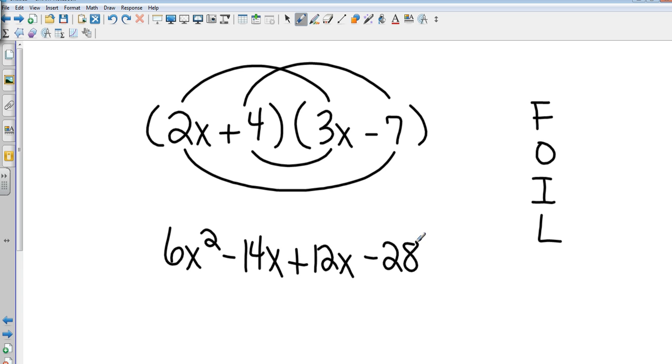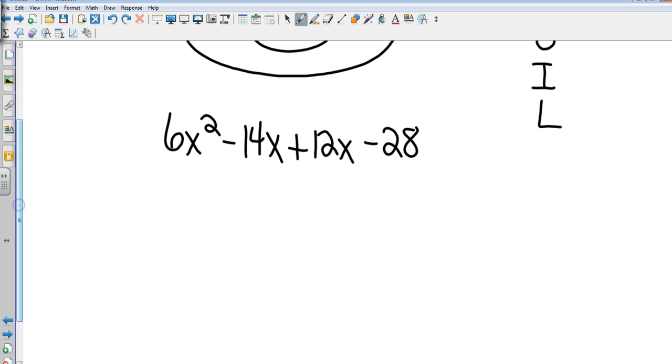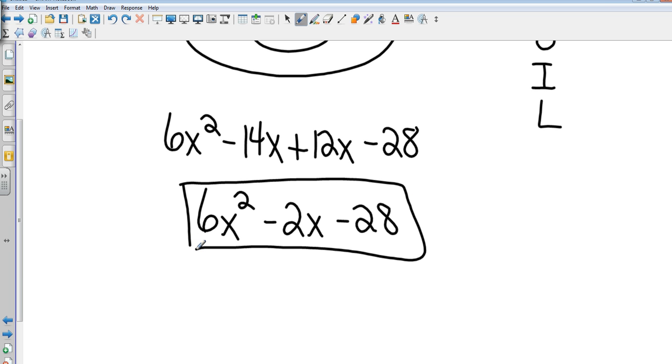And last times last, that's going to give me a negative 28. Again, notice the little smiley man there: first, outside, inside, last. Let's combine like terms, polish this one up. So that's 6x². I've got negative 14x plus 12x, that's negative 2x, minus 28.